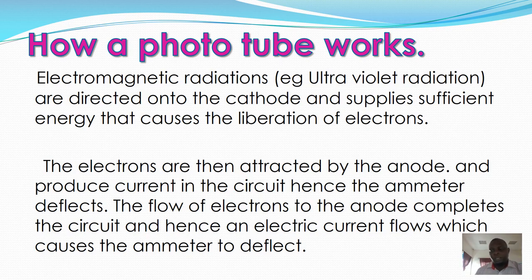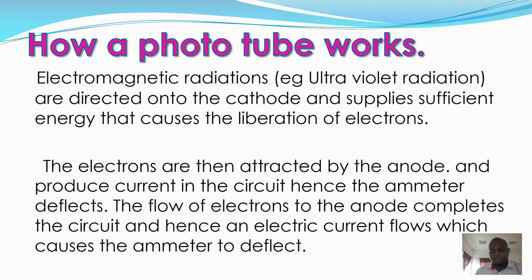This causes the ammeter to deflect. When cathode rays fall on the photoelectric surface, they liberate electrons which flow around the circuit, hence conducting current.